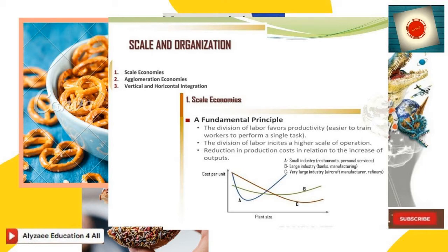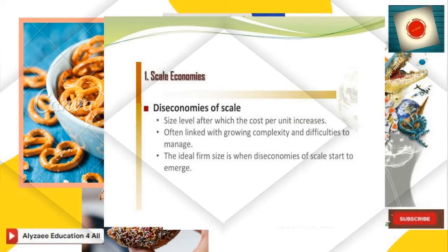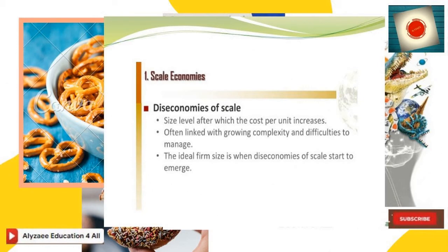Looking into scale economies, the fundamental principle is that the division of labor favors productivity and it is easier to train workers to perform a single task. The division of labor incites a higher scale of operation, with reduction in production cost in relation to the increase of output. In a diagram with cost per unit on the y-axis and plant size on the x-axis, line A represents small industries like restaurants and personal services, B depicts large industries like banks and manufacturing, and C depicts very large industries like aircraft manufacturing and refineries.